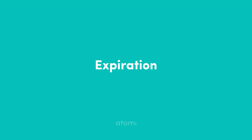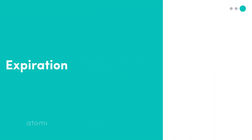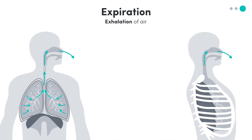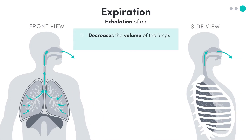The opposite happens during expiration, which is when air moves out of the lungs and back into the atmosphere. The volume in the lungs has to decrease, which will increase the pressure in the lungs so that the air moves out again in order to achieve that pressure balance.